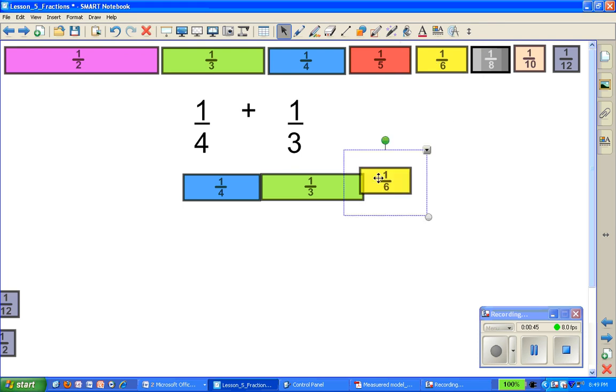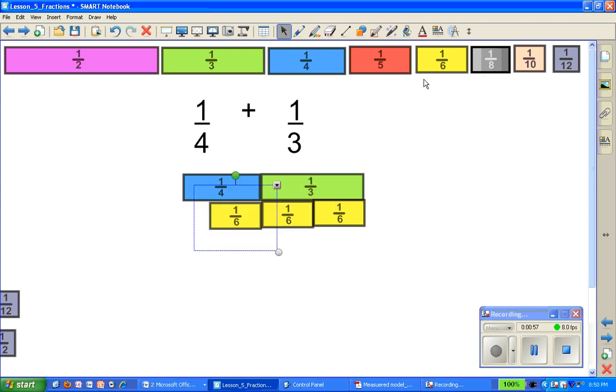So essentially what you do and what your students may do is trial and error and they'll say well look at that, 2 sixths are the same as 1/3.